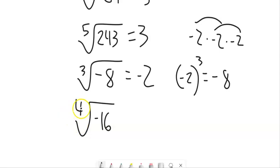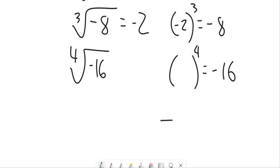But if I ask what to the fourth power is negative 16, I have four things multiplied together. And if they're all negative, those would make a positive. Those would make a positive, right? Whatever my number is.